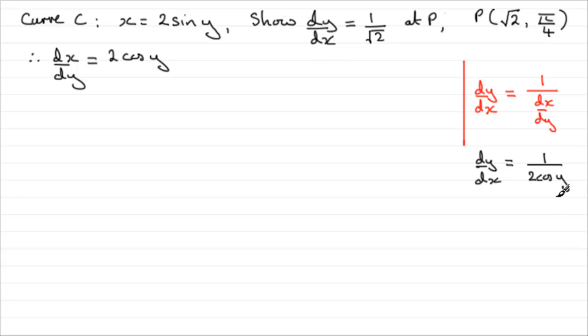And then all you've got to do is substitute pi upon 4 in for y and work out what your result is going to be, either on a calculator or just do it by hand because you should know that the cosine of pi upon 4 is 1 over root 2.